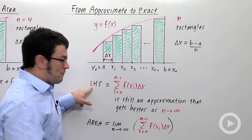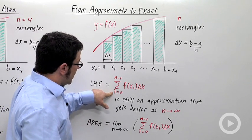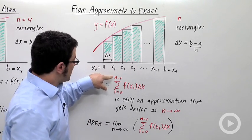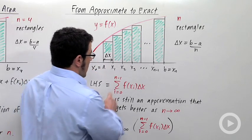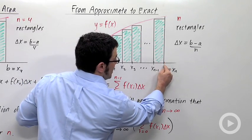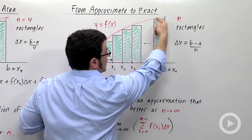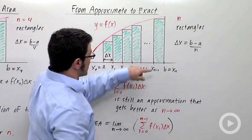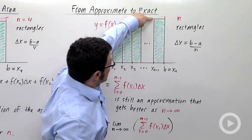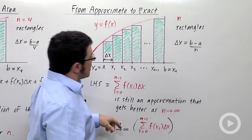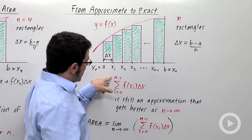The left-hand sum is now the sum from i equals 0 to n-1. Notice we don't go all the way up to n. x_n would be this number here, b. And we don't use that height to find the height of the rectangle. The last rectangle is f(x_{n-1}) times Δx.